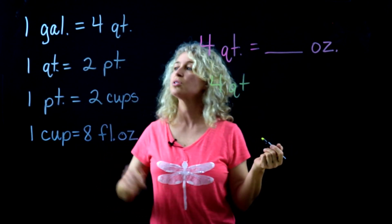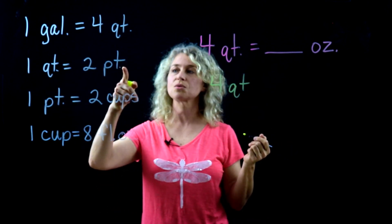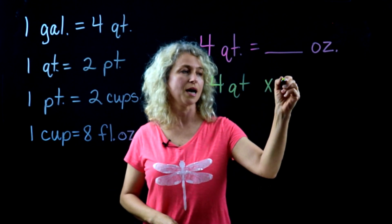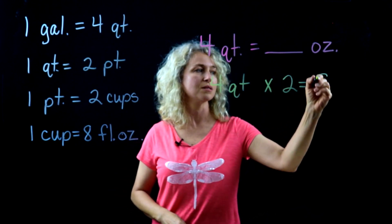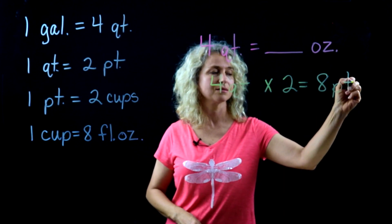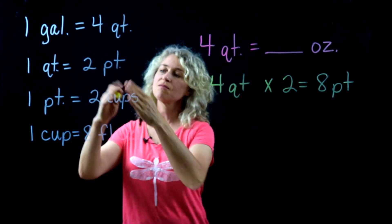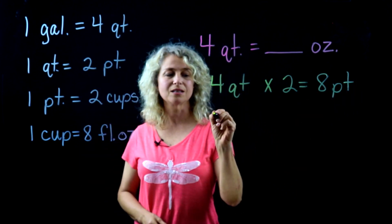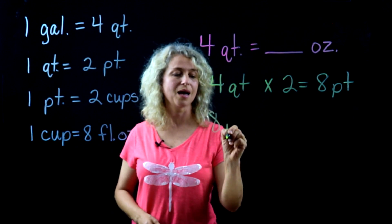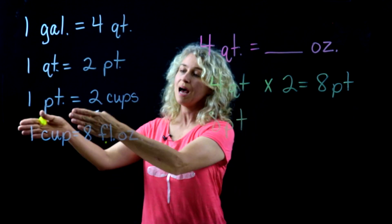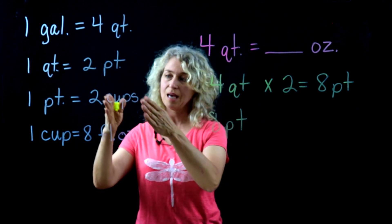So let's change the four quarts to pints first. Times two equals eight pints. Now that we have the pints, let's look at the next step.